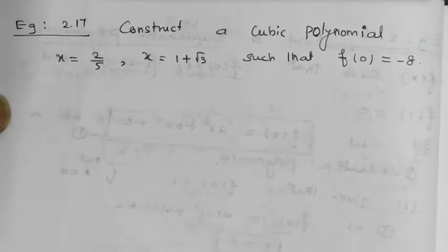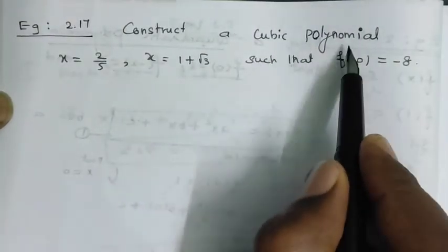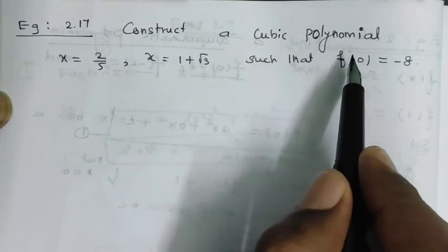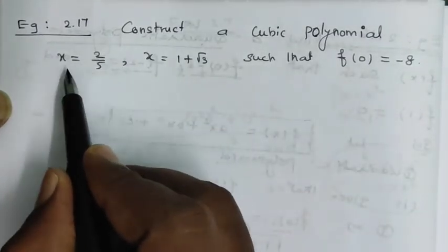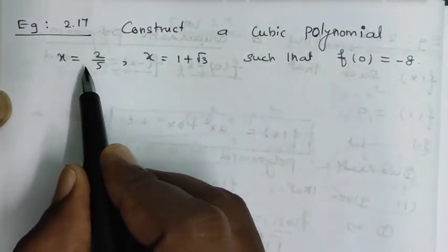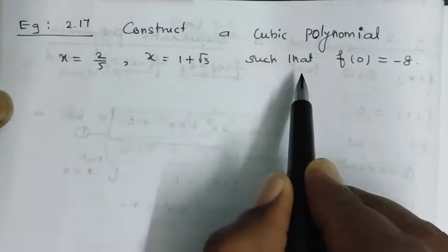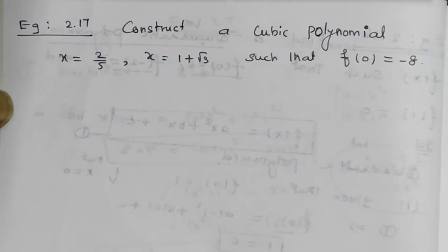Hi students, welcome to my channel. Here we are going to do example 17. Construct a cubic polynomial function with rational coefficients having zeros x equal to 2/5, x equal to 1 plus root 3, such that f(0) is equal to minus 8.